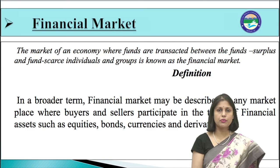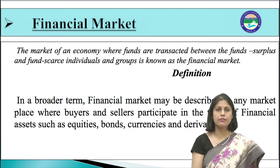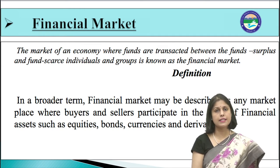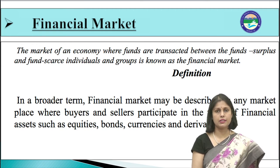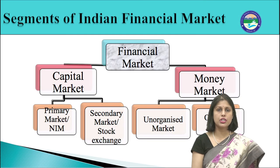The second component of the structure of the financial system is the financial market. The market of an economy where funds are transacted between fund-surplus and fund-scarce individuals and groups is known as the financial market. In a broader term, financial market may be described as any marketplace where buyers and sellers participate in trade of financial assets such as equities, bonds, currencies, and derivatives. Financial market is not a source of finance, but a link between savers and investors, both individual as well as institutional.